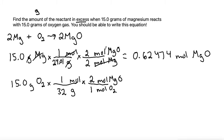So now we've converted to moles of magnesium oxide. Grab a calculator again, 15 divided by 32 times 2 gives me 0.9375 moles of magnesium oxide.